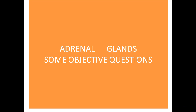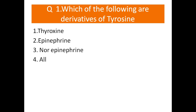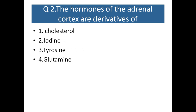There are some questions regarding the NET examination this year. Question number one: which of the following are derivatives of tyrosine? Options: thyroxine, epinephrine, norepinephrine, or all of the above.